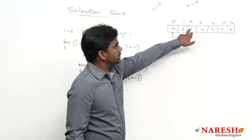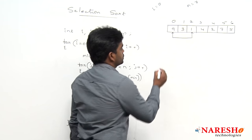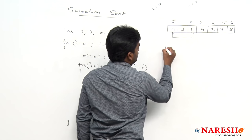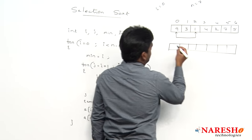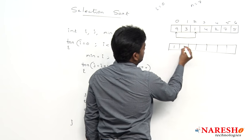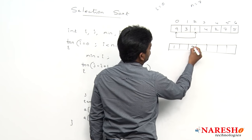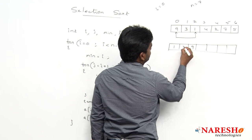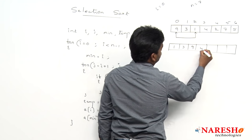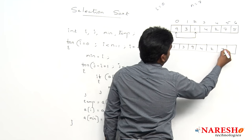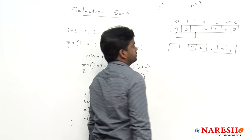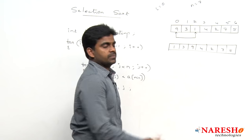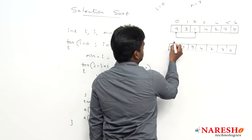Here the minimum element is 1. So 1 will come to index 0, and 9 will move to where 1 was. The remaining elements — 3, 4, 2, 7, 5 — stay the same.